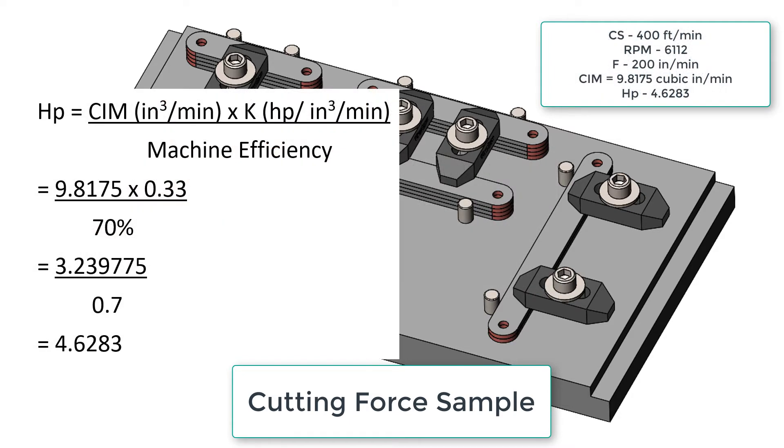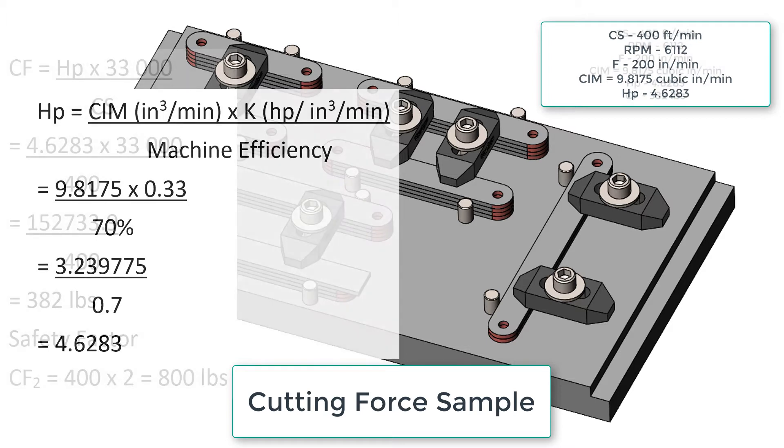Next we calculate the horsepower requirements by taking our cubic inches per minute of material removal rate times our K-factor divided by our machine efficiency to get a horsepower requirement of 4.6283.